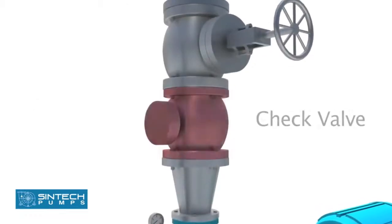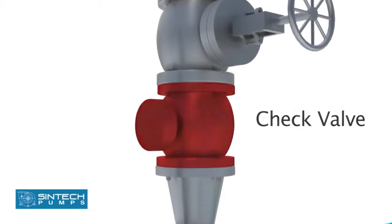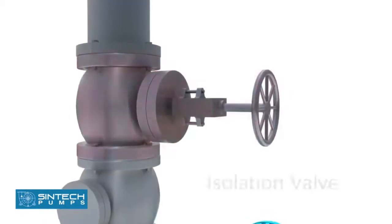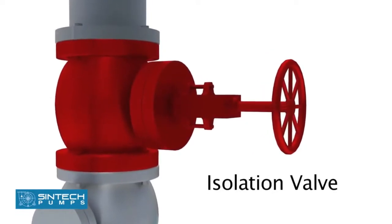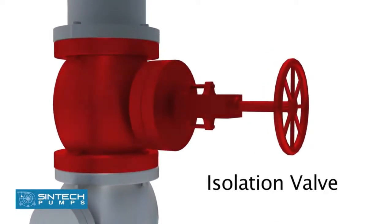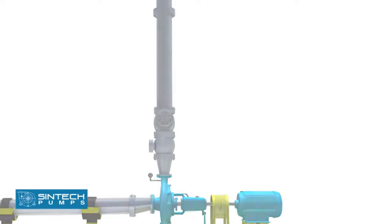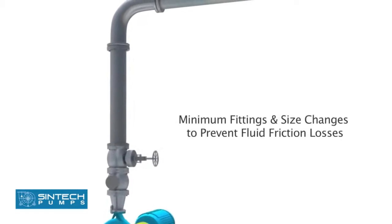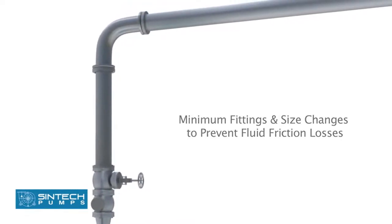The check valve used in the discharge should be of non-slam type to prevent hydraulic shocks. The isolation valve is provided downstream of the check valve so that these can be taken up for servicing whenever required. Discharge pipe size should be at least one commercial size larger than the opening of the pump outlet. The number of fittings and size changes should be minimum to prevent fluid friction losses.